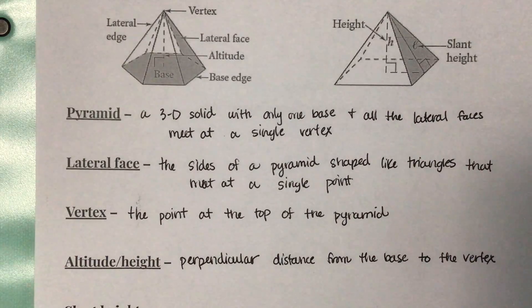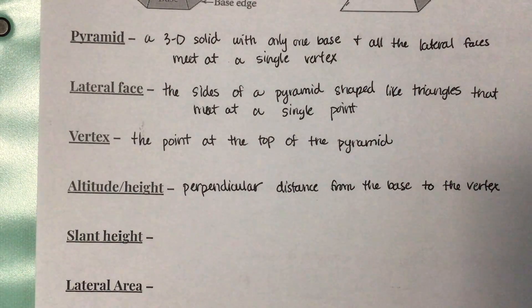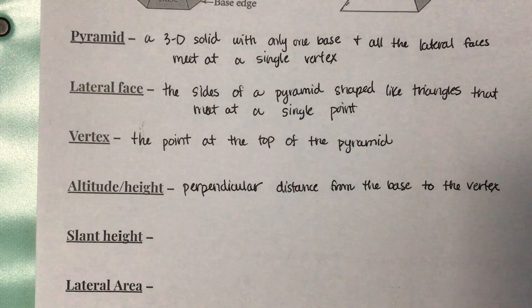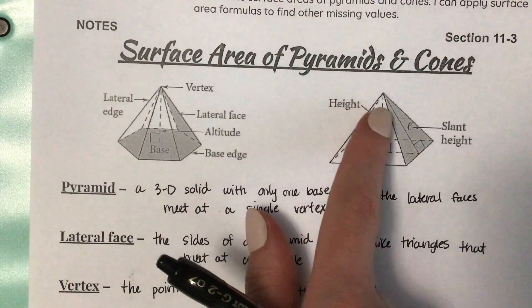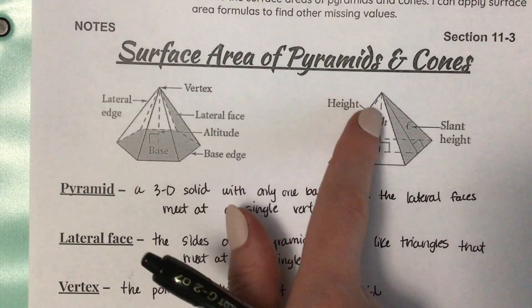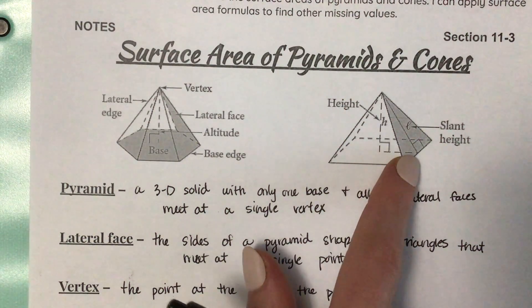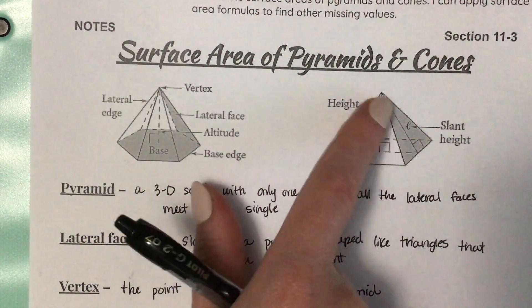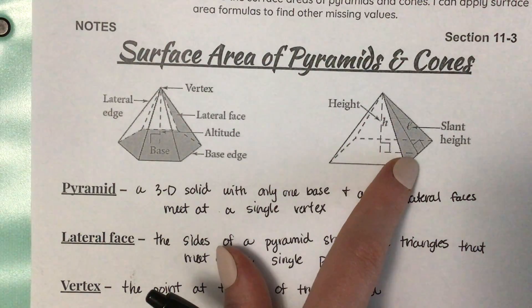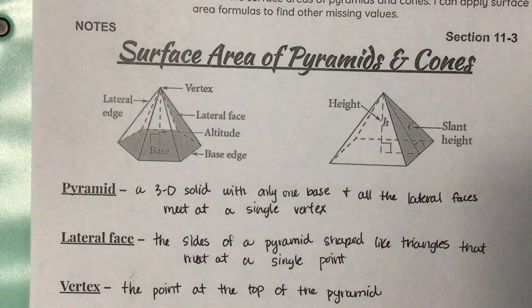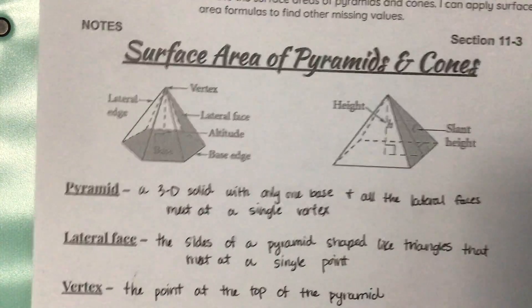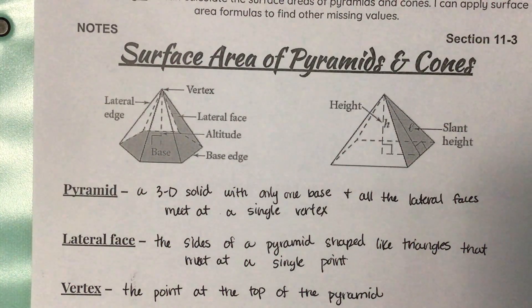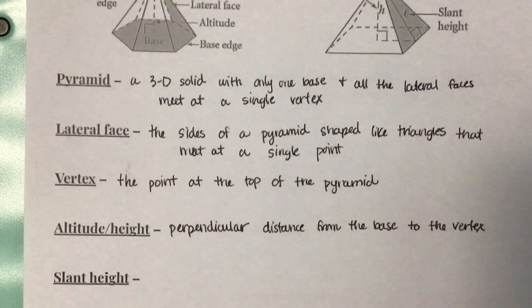We also have something unique to pyramids and cones called slant height. Slant height goes along the outside of the pyramid, along the edge of the face, or through the center of the face, going from the base of the face up to the vertex. It's called slant height because those edges are slanted — basically, slant height is how tall a lateral face is.